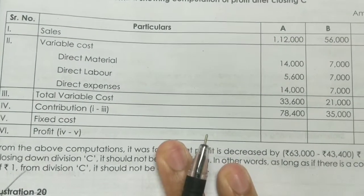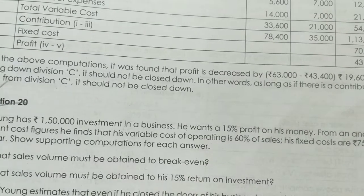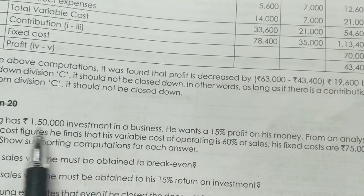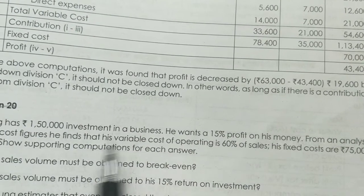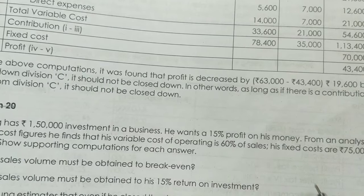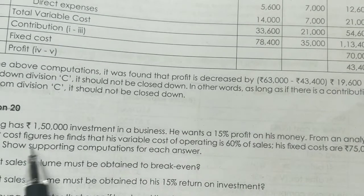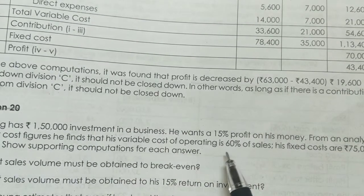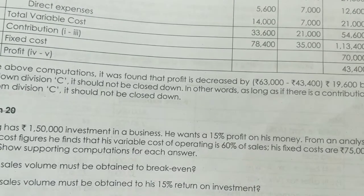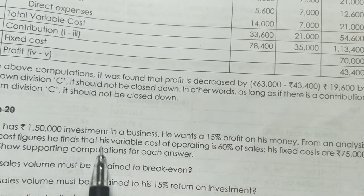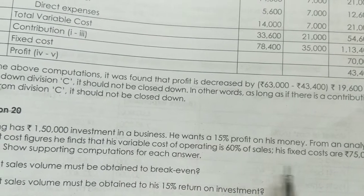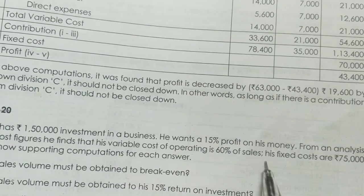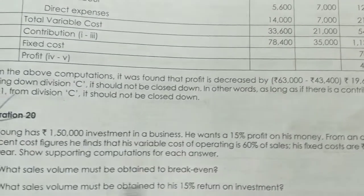Illustration 20 — Mr. Young has 1 lakh 50 thousand investment in a business. He wants a 50% profit on his investment. From an analysis of recent cost figures, he finds that his variable cost of operating is 60% of sales.